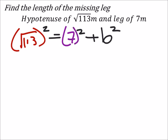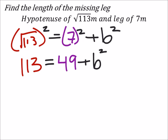This one's not too bad, because the square root of 113, if I square that, then I would just get 113. And 7 squared is 49. Of course, I'll be adding the b squared. The b is the other leg, the missing leg value which I am solving for.